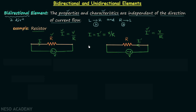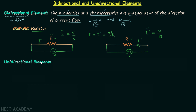The resistance offered to current I is R, and the resistance offered to current I' is also R. So the property of the resistor does not change when the direction of current is reversed, and therefore a resistor is a bidirectional element.